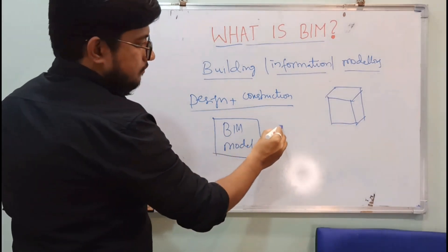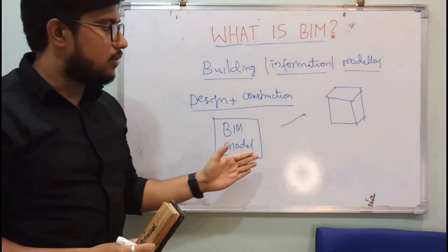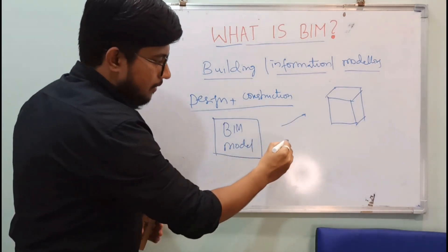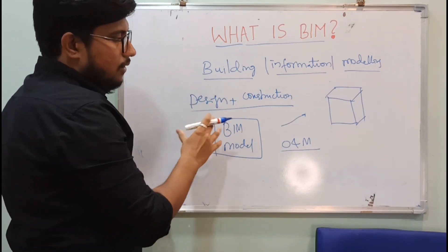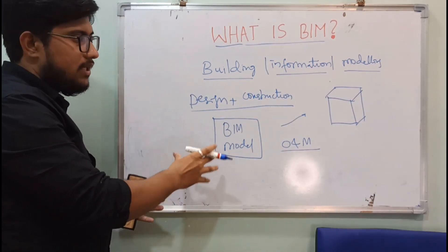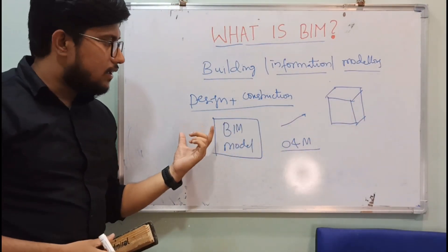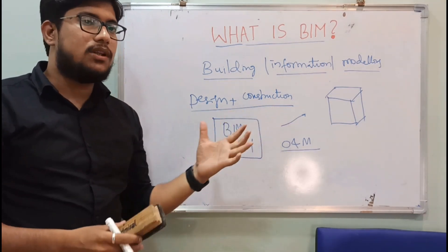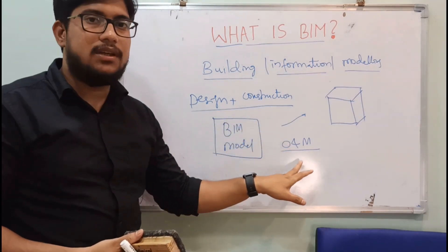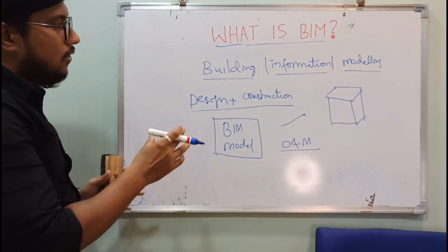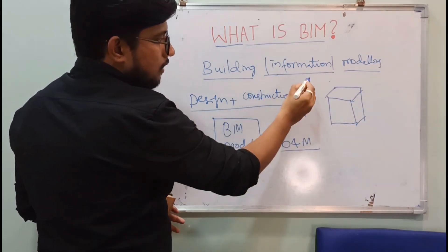After construction, when the model is handed over to the client — and the physical building is also handed over — during the operation and maintenance or facility management stage, we use all of the information that was created about the lifts, heavy elements, and all other assets. So now we understand: we created the information during design and construction, and we use that information during the operation and maintenance stage of the project. We create a 3D model to keep the information inside the model itself.